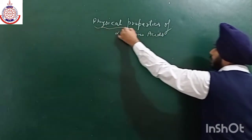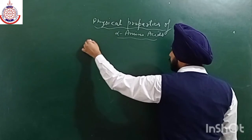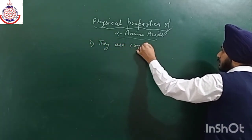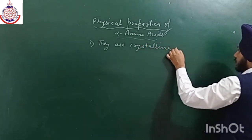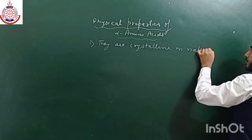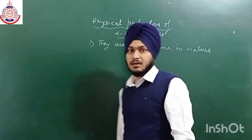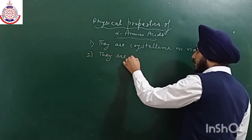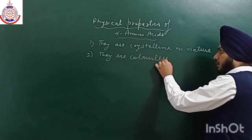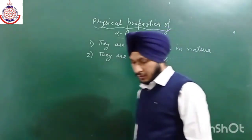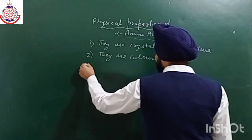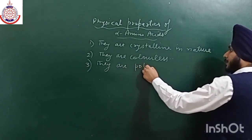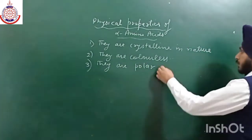The physical properties of alpha amino acids: first, they are crystalline in nature; second, they are colorless and odorless; third, they are polar in nature due to the presence of COOH and NH2 groups.